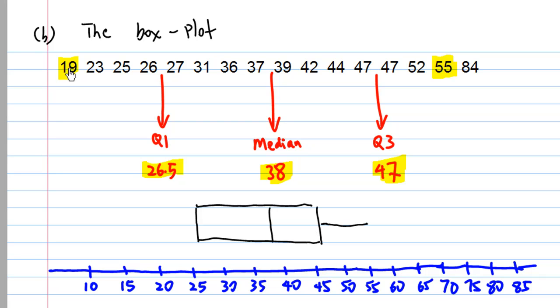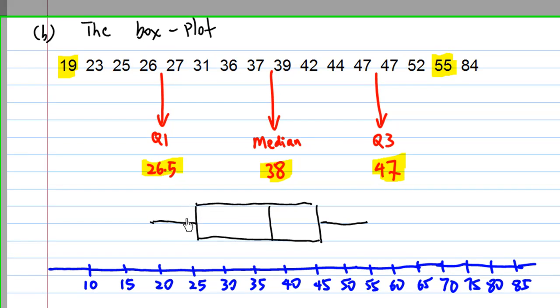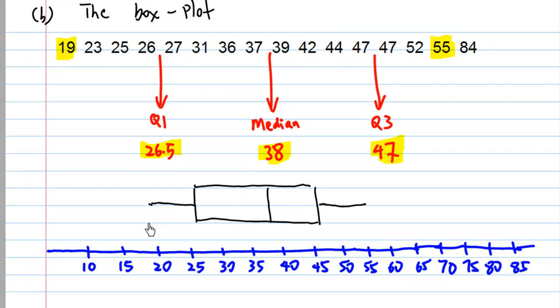The smallest number between the fence is 19, so you put 19, draw a vertical here. This number is at 19, this one is at 26.5, this is at 38, this is at 47, and this is 55. And this is the box plot.